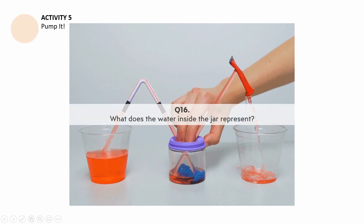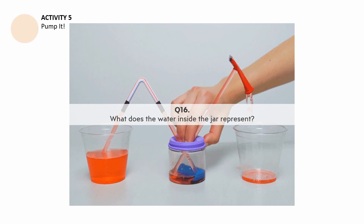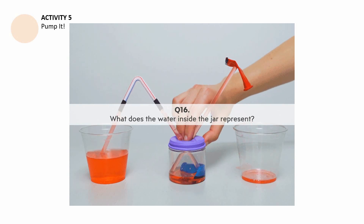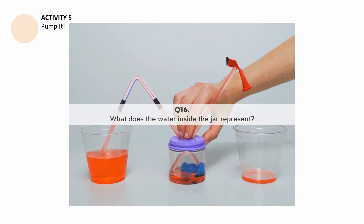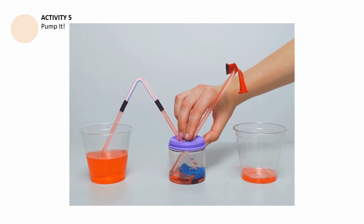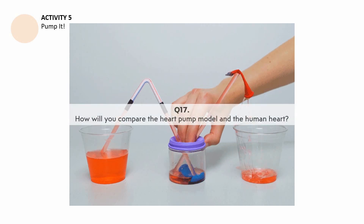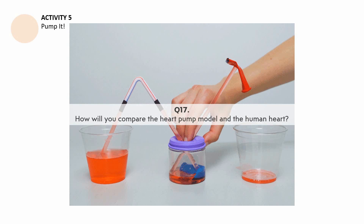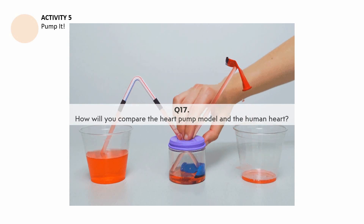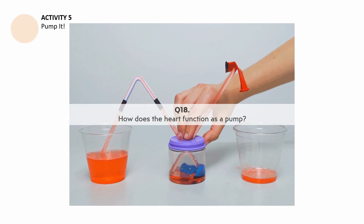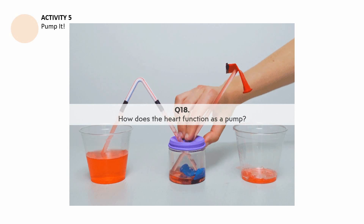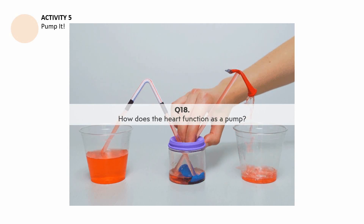Answer the following questions on your notebook or on a clean sheet of paper. Question number 16: what does the colored water inside the jar represent? Question number 17: how will you compare the heart pump model and the human heart to each other? Question number 18: how does the heart function as a pump?